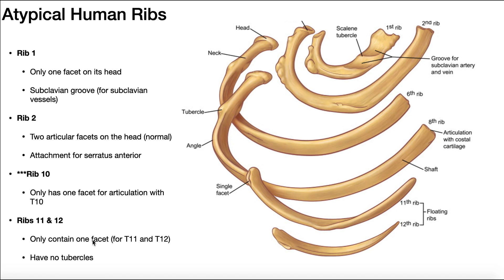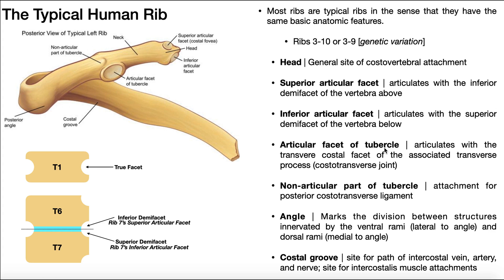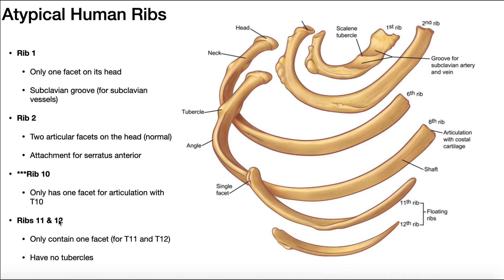Ribs 11 and 12 are the other two ribs that are always atypical. They only contain one facet on their head: rib 11's head articulates completely with a facet on T11, and rib 12 articulates with a facet completely on T12 — not via demi-facets. Additionally, ribs 11 and 12 do not articulate with the sternum anteriorly, and they have no tubercles. Ribs 1 through 10 all have tubercles, which allow articulation with the transverse process. Ribs 11 and 12 therefore do not articulate with the transverse processes of T11 and T12 — only via that one facet and some ligaments.